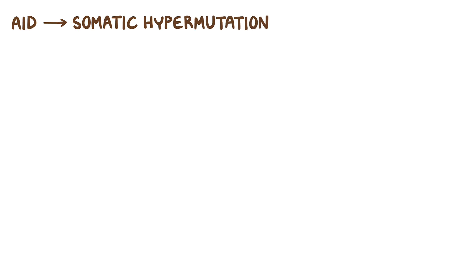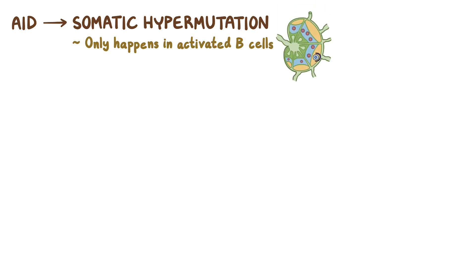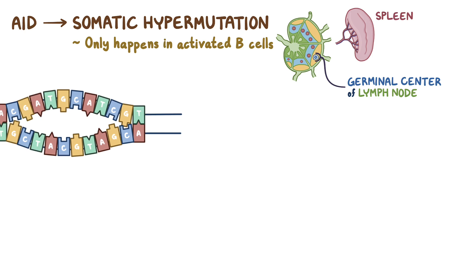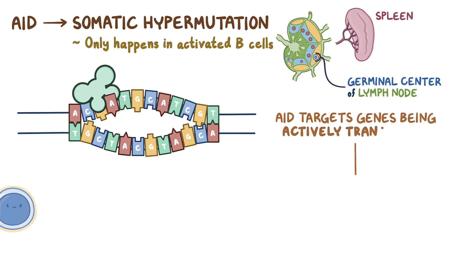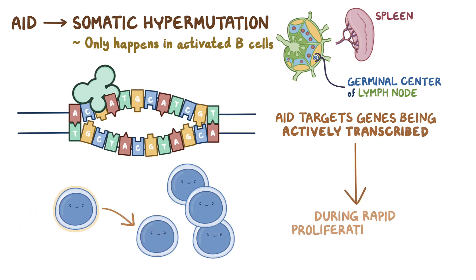In addition to promoting class switching, AID also leads to somatic hypermutation. Somatic hypermutation only happens in activated B cells, not T cells, and primarily occurs in the germinal centers of the lymph nodes and spleen. AID can only bind to single-stranded DNA, so it's really only able to target genes that are being actively transcribed during the rapid proliferation phase that occurs following B cell activation.